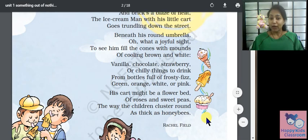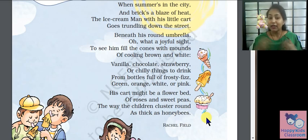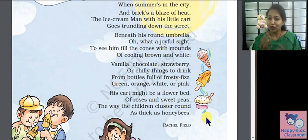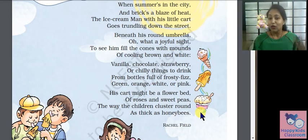So here is the little cart of ice cream — it looks like a flower bed. Why? Because it looks like roses and sweet peas. It is like a flower bed, and the children around it like honeybees.